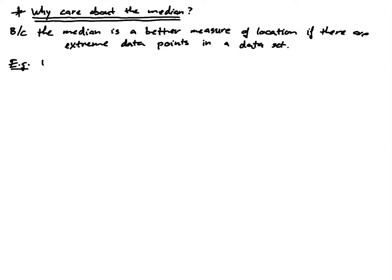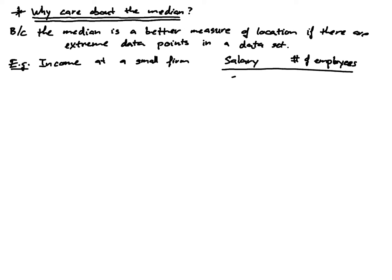Let's look at an example using income at a small firm. Suppose we have salary in thousands of dollars: four people earning $50k, two people earning $60k, two people earning $70k, one person earning $80k, and one person — probably the CEO — earning $100k. Let's find the mean and median of this data set.